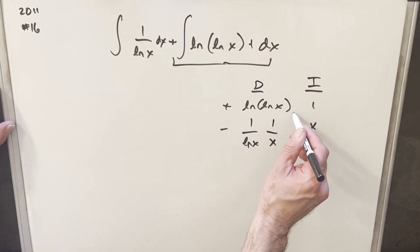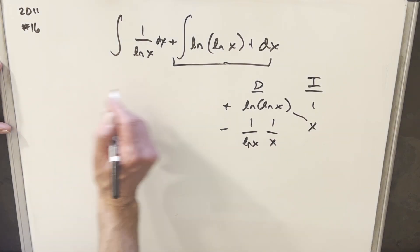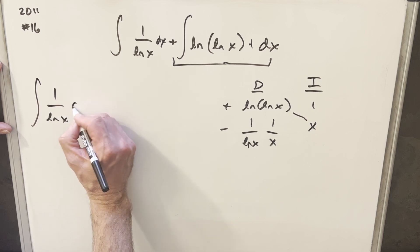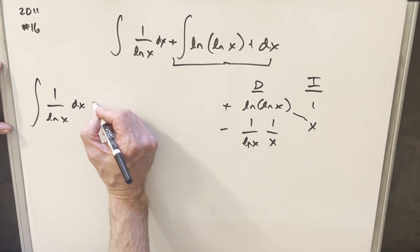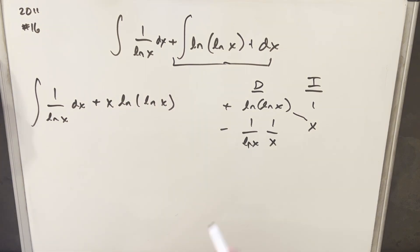So in our solution, this diagonal is going to be part of our solution. Let's not forget this first integral, so let's see what we have now. We're going to have this integral of 1 over lnx dx, then for that diagonal, we're going to have this x ln of lnx term, and then this row here is going to be another integral.